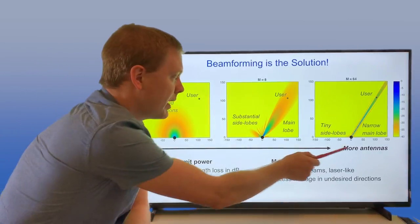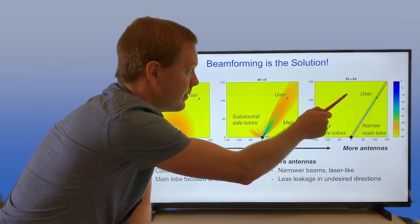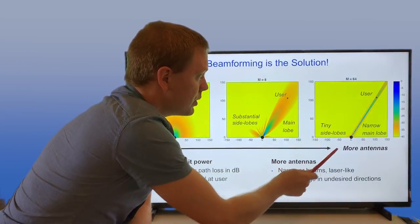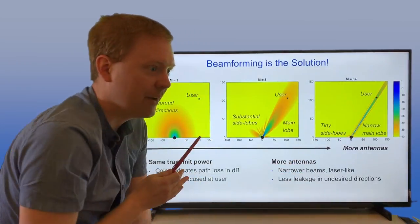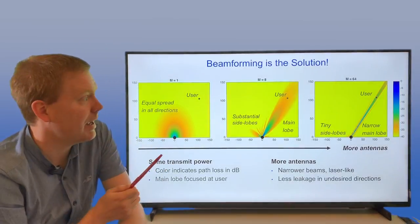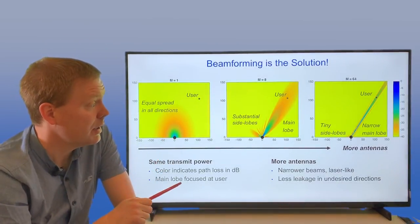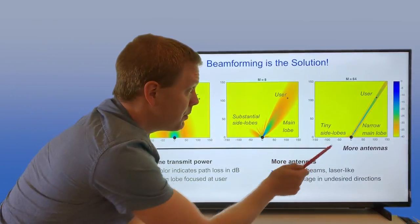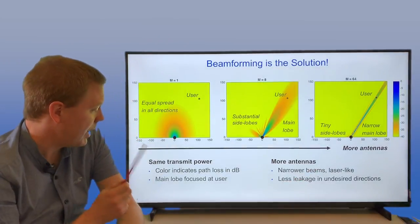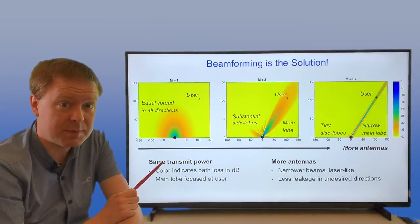If you go up even more in antennas - here you have 64 antennas sending towards the user - now it looks almost like you have a laser sharp signal transmitted towards the user. There will still be some tiny side lobes pointing out directions, but the main thing here is that you use the same transmit power.